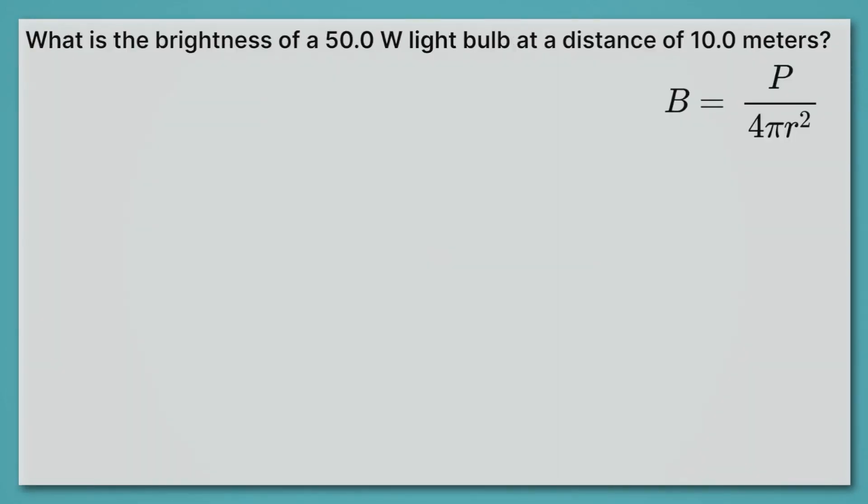Now it's your turn to practice. What is the brightness of a 50 watt light bulb at a distance of 10 meters? Pause the video and give this a try. You should have gotten that the brightness was 0.0398 watts per meter squared. If you were unable to get that answer, pause the video and see where you went wrong in your steps.